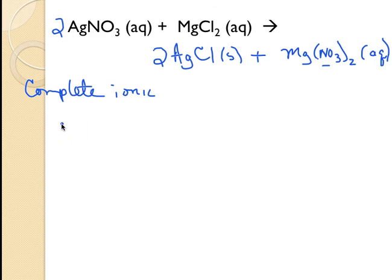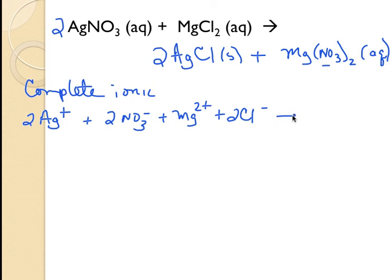So, silver nitrate, I do know that that's soluble. So, I would have two silver ions and two nitrate ions in solution. We're going to assume that these are in solution, so we don't have to write that state of matter. I'm going to react that with magnesium chloride that is also soluble. So, I will have one magnesium ion and two chloride ions. When they react, I am going to form that precipitate and keep that together because it does exist in solution as an ionic compound in its solid form.